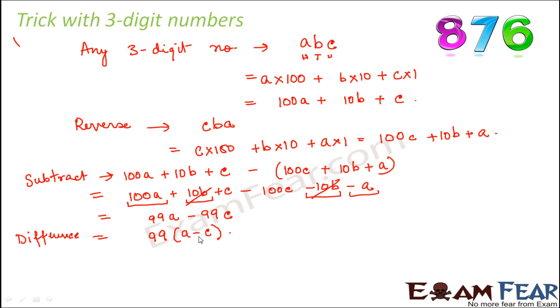If C is equal to A, then the difference is equal to 0. So whenever you arrive at any such result, you can say that this number will be an exact divisor of the difference.